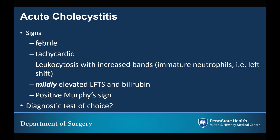In regards to the signs, these patients are typically febrile and tachycardic. When you get your lab workup, they will demonstrate leukocytosis with increased bands — meaning immature neutrophils, sometimes referred to as a left shift. When you look at their biliary function tests, you'll see mildly elevated LFTs and elevated bilirubin. When you do your physical exam, they will demonstrate a positive Murphy sign: when you palpate the right upper quadrant directly over the gallbladder, the patient ceases inspiration when you push on the gallbladder. This is considered to be fairly diagnostic of acute cholecystitis.